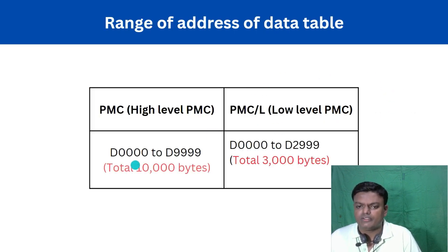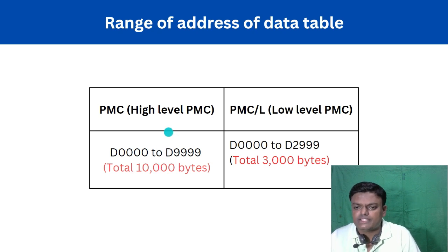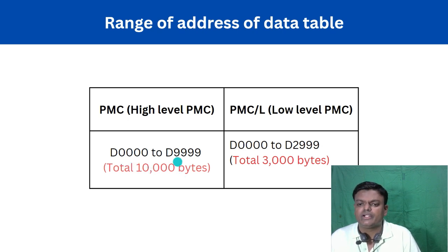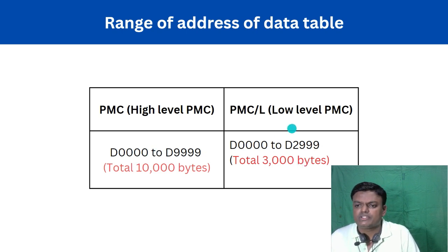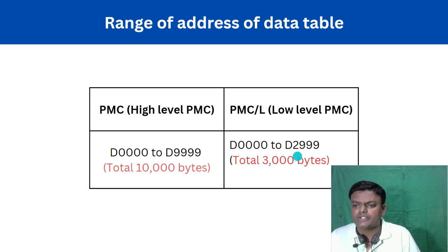In Fanuc there is a range of data table addresses available to use in the ladder. For high-level CNC PMC, a total of 10,000 bytes are available — from D0 to D9999. For low-level PMC such as Mate or Mate TD, you can use a maximum of 3,000 bytes — from D0 to D2999. These are the ranges you can use for data table addresses in your ladder.